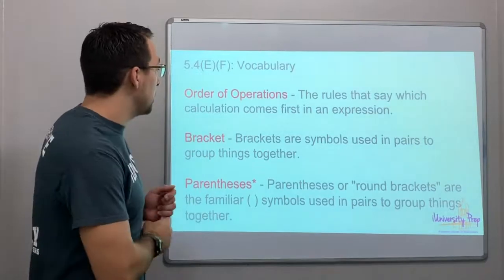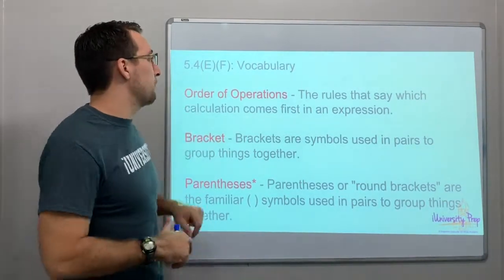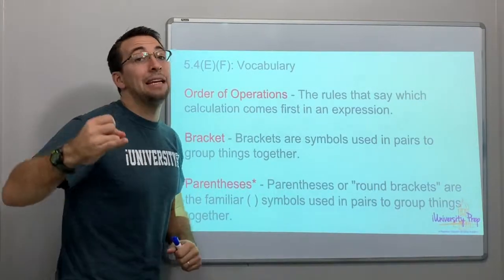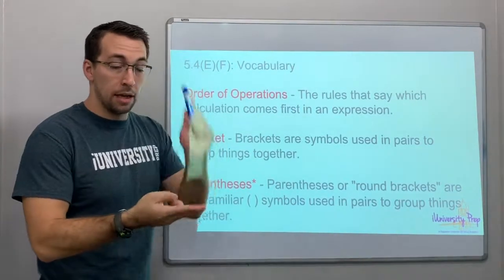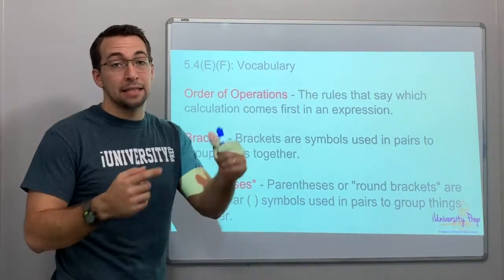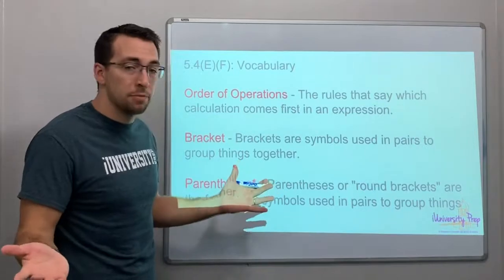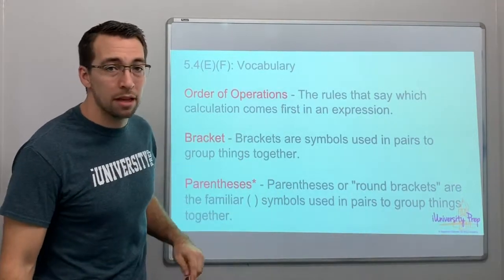For this cheat code, let's go over the vocab - same vocab as 5.4e. Order of operations: Please Excuse My Dear Aunt Sally. Parentheses, Exponents, Multiply, Divide, Add, and Subtract. Please Excuse My Dear Aunt Sally, she's crazy!